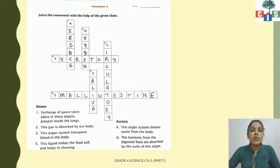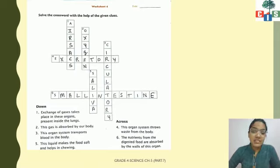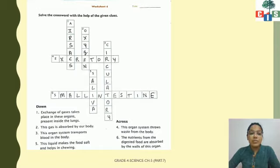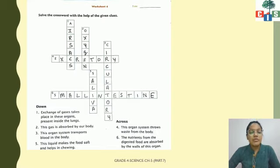Moving to worksheet number four, a crossword puzzle with hints. Down number one: exchange of gases takes place in these organs present inside the lungs — the answer is air sacs. Number two: this gas is absorbed by our body — the answer is oxygen. Number three: this organ system transports blood in the body — the system's name is circulatory system.